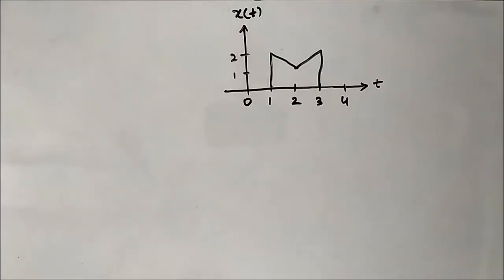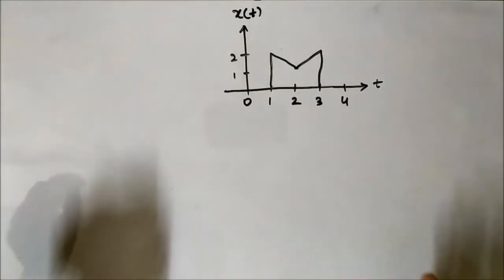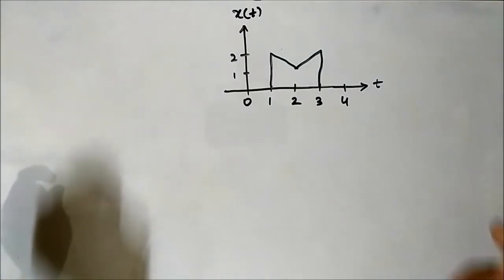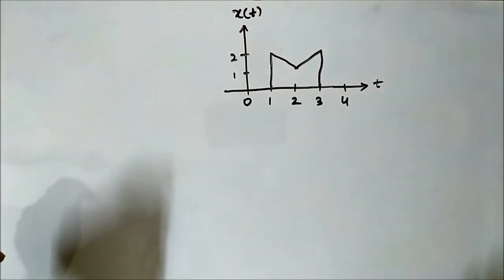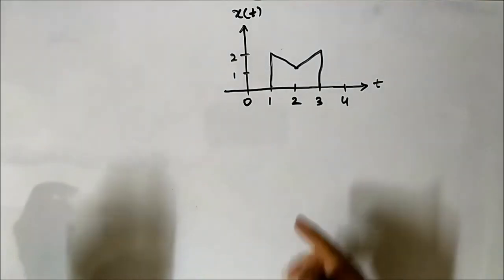Hello friends, welcome to Engineering Tutorial. In the previous video we discussed the basic time-shifting operations directly performed on basic test signals — that is, the unit step, ramp, and impulse signal. In this video we are going to perform time-shifting operations on some random signals with different shapes.